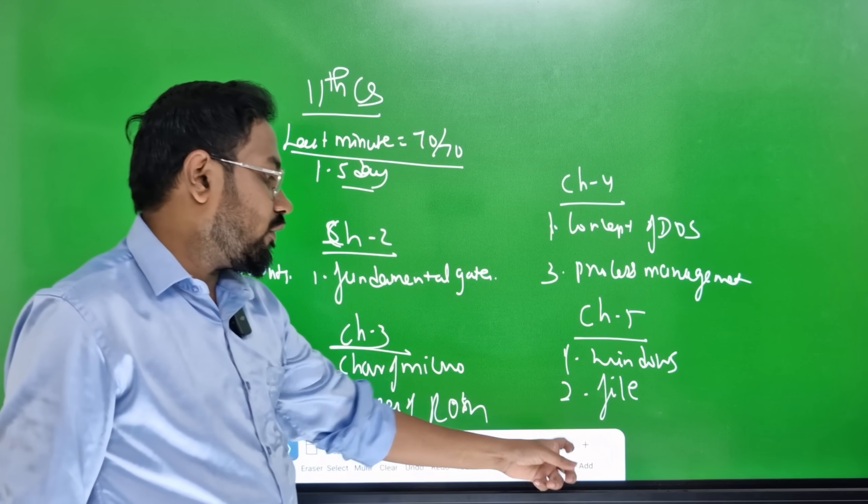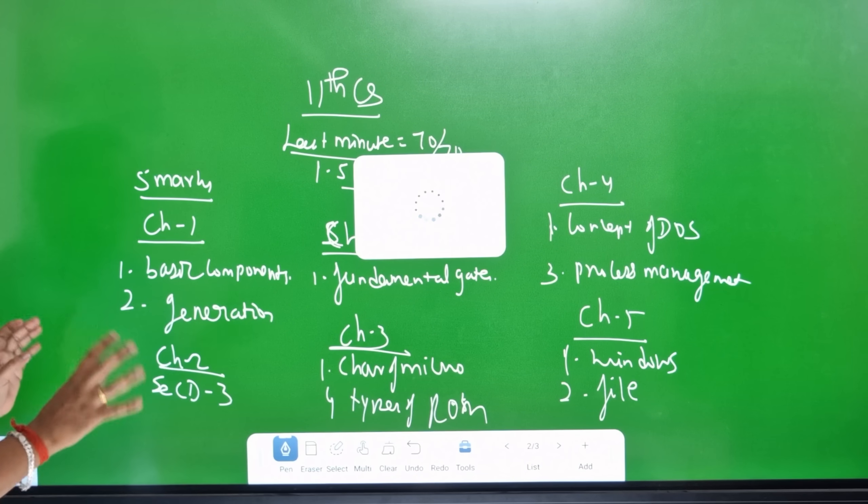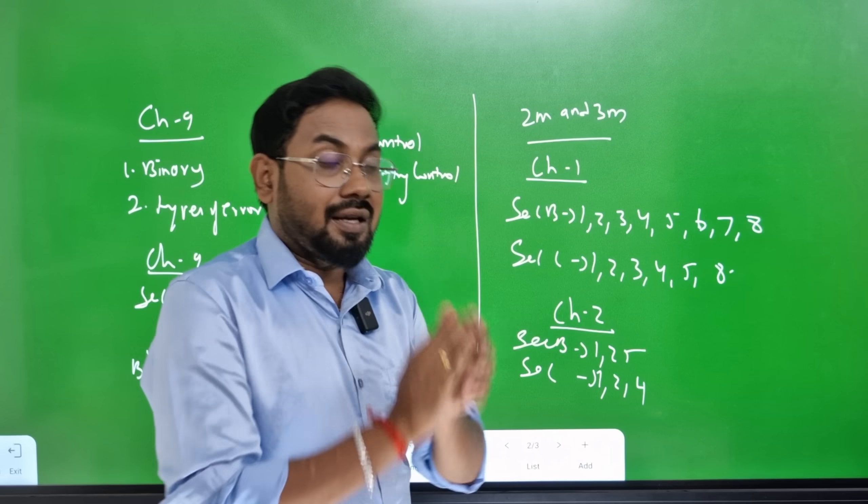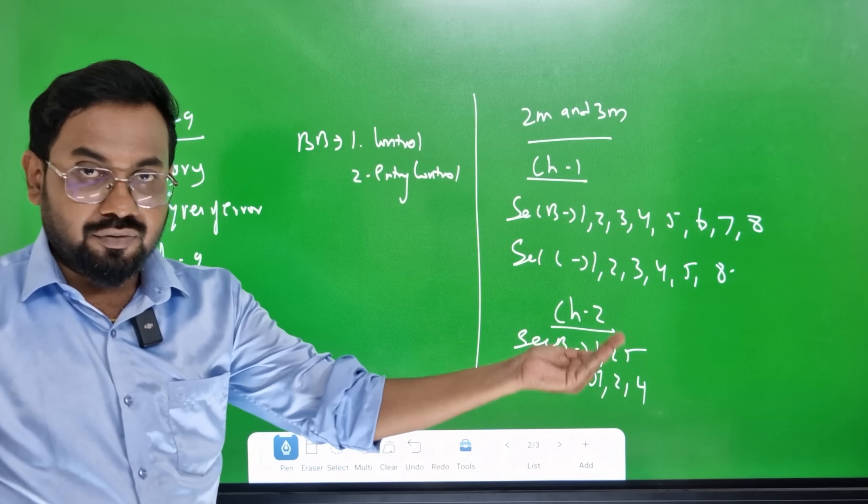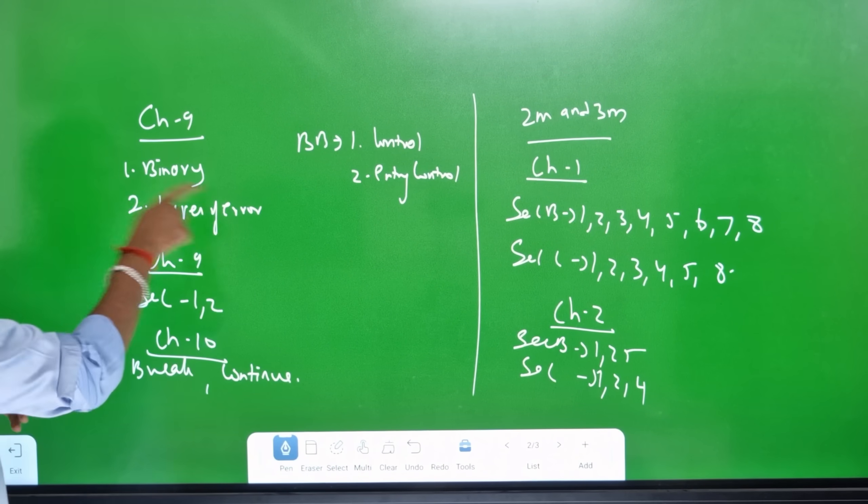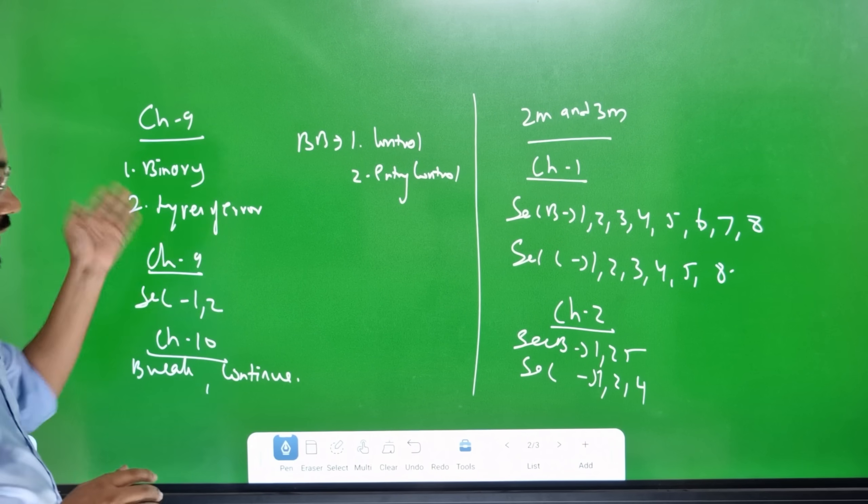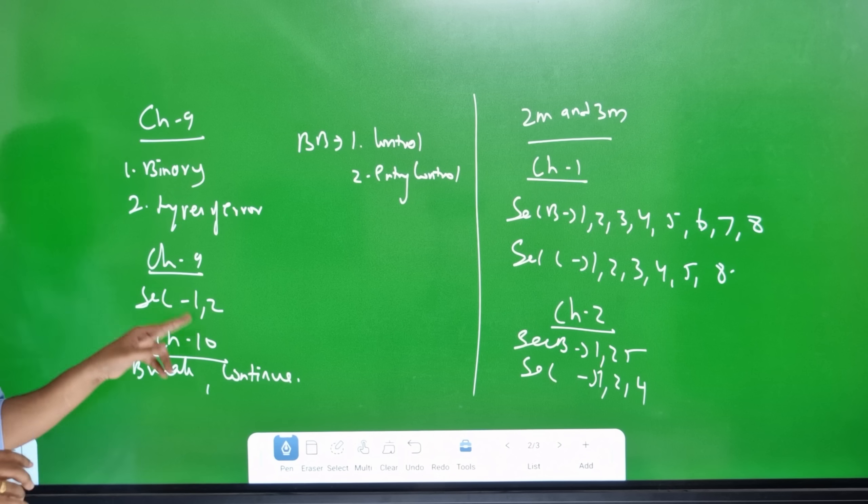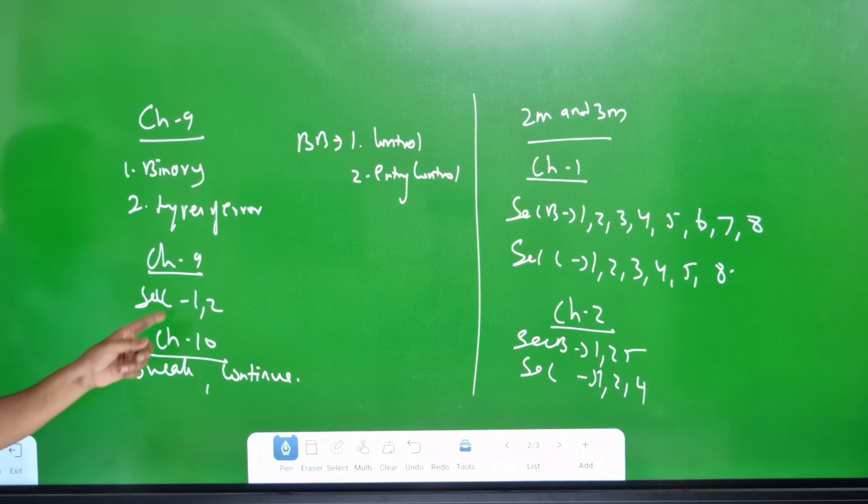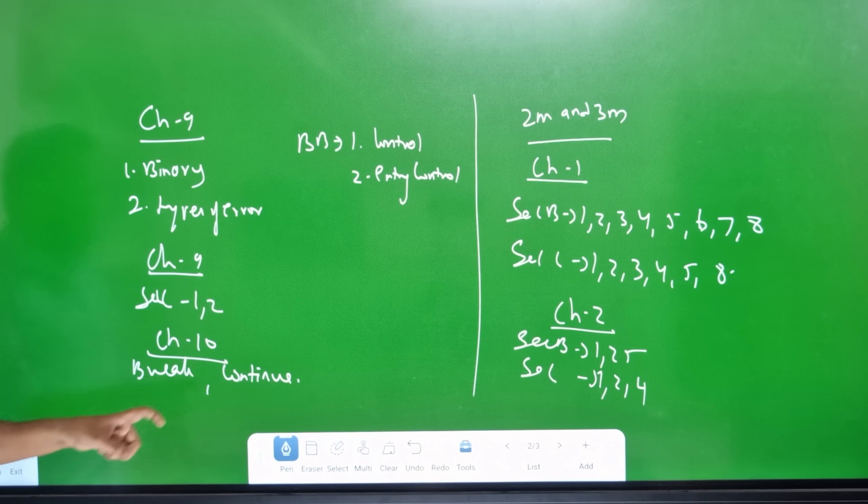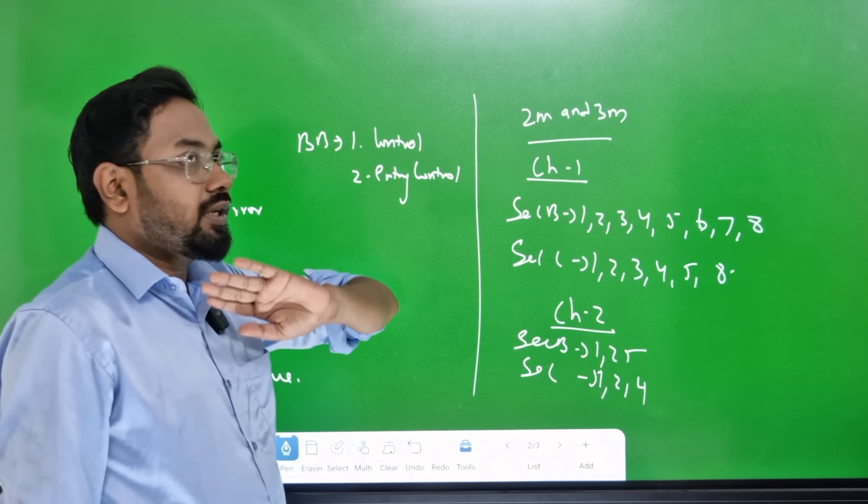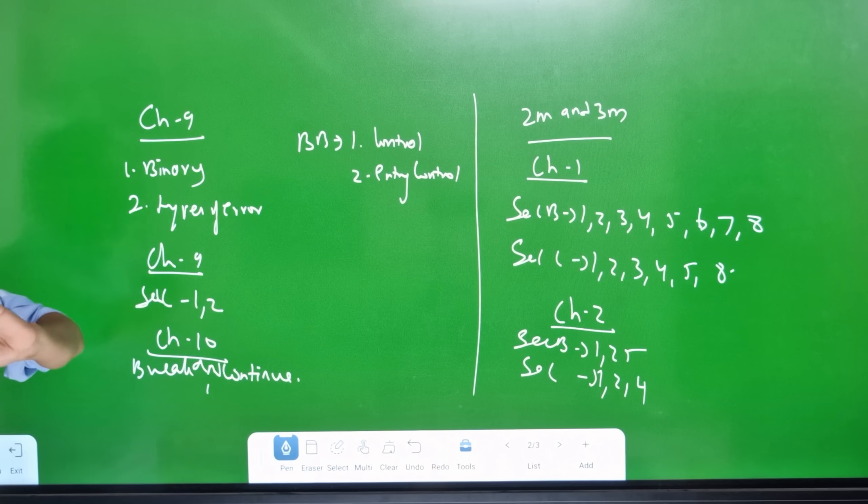Third one Chapter 5 is Windows, Files or Folders. Chapter 9, 6, 7, 8. You can see the previous video. Binary Operator Types of Errors Chapter 9. Section 1 is Section C. Chapter 10 Break Continue difference book back. Control Statement, Entry Control Loop.